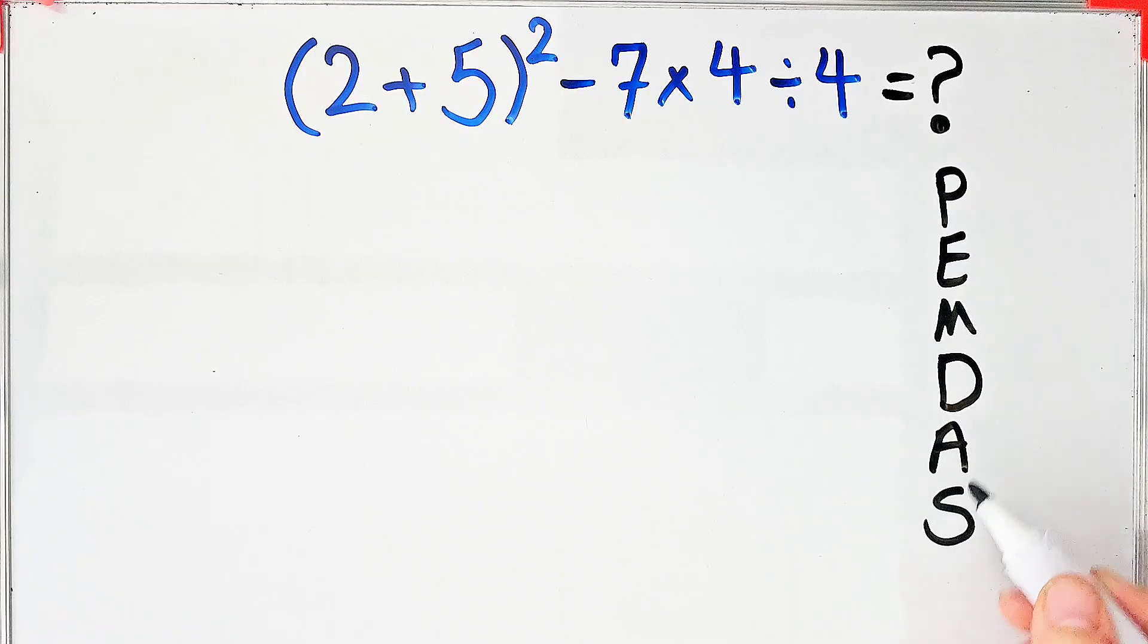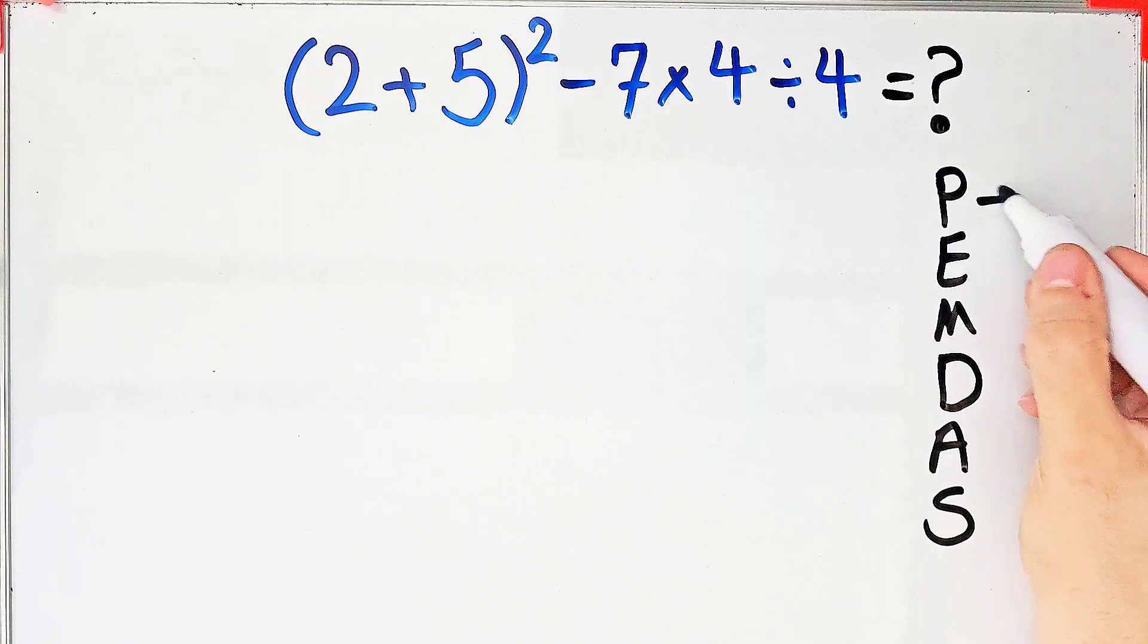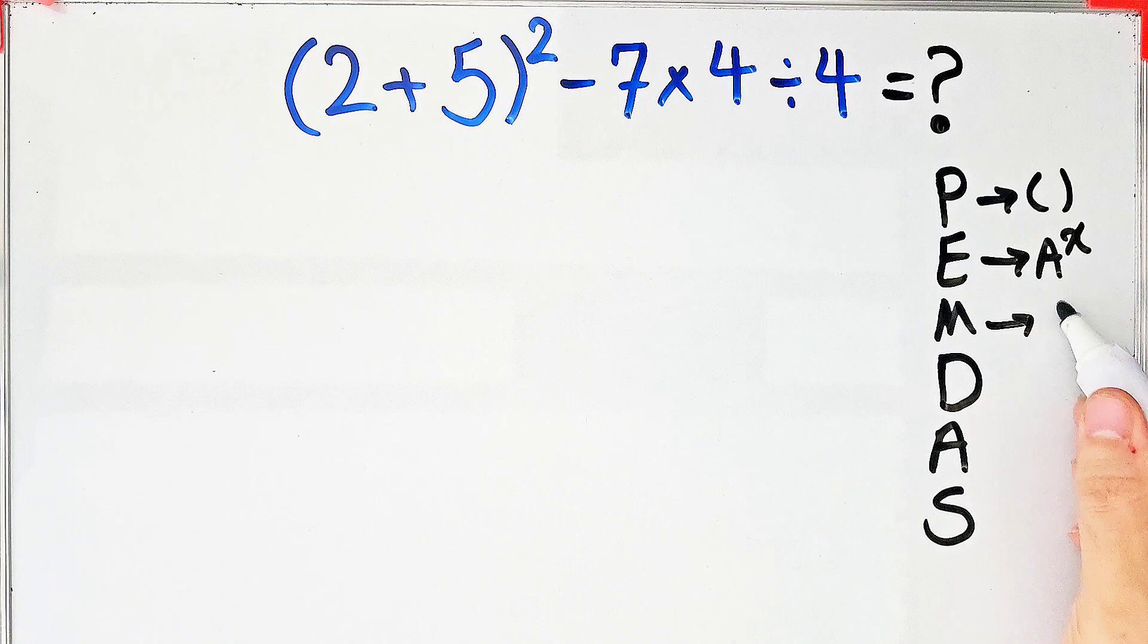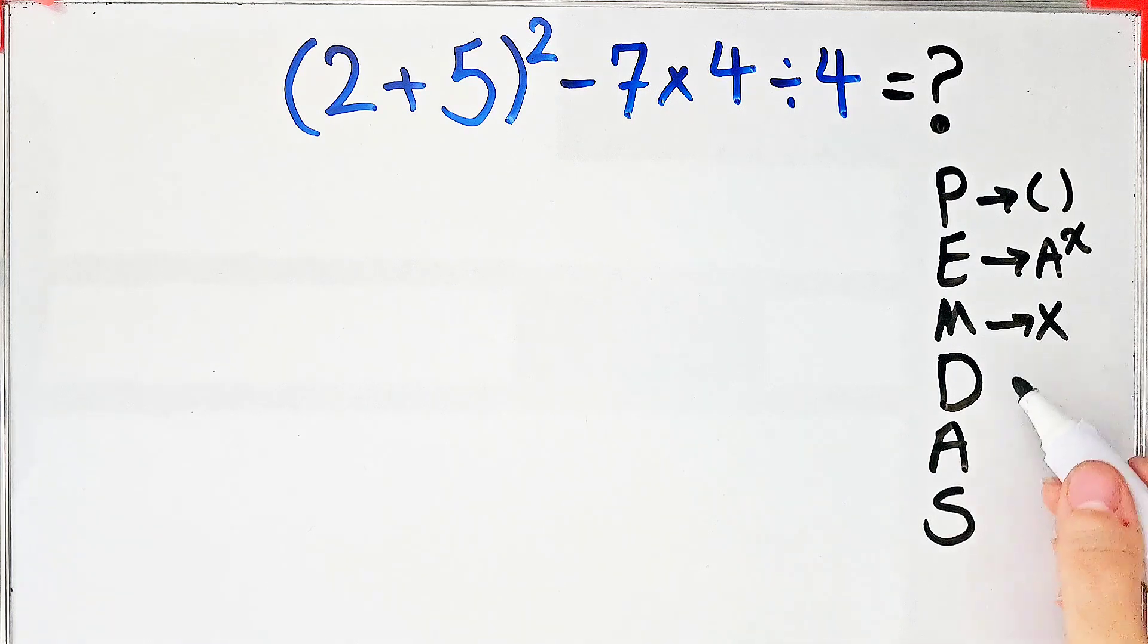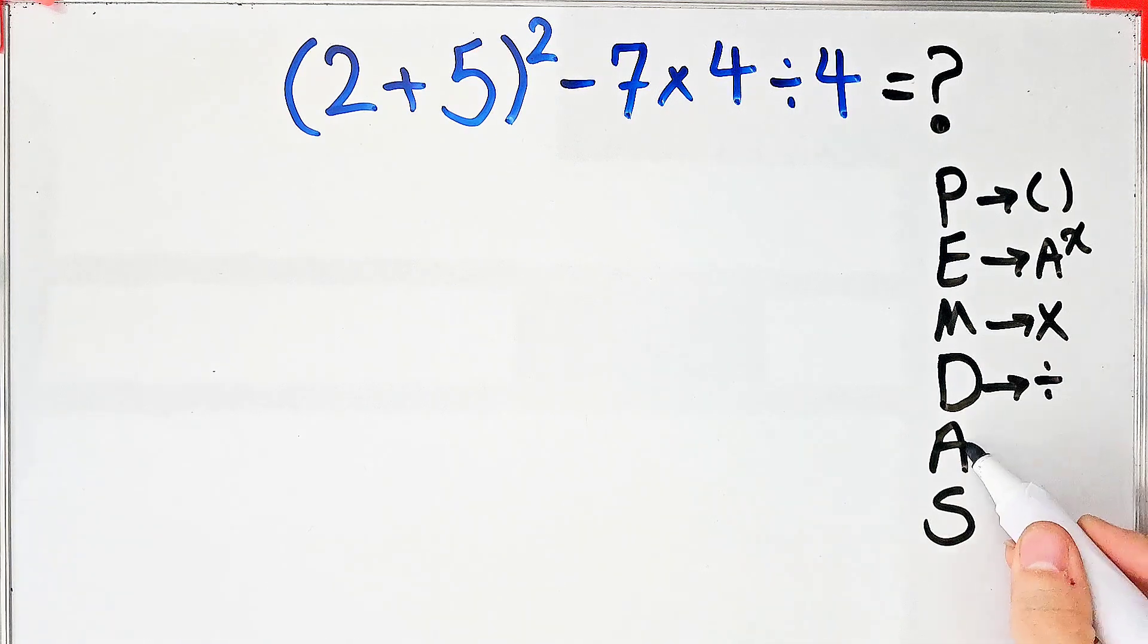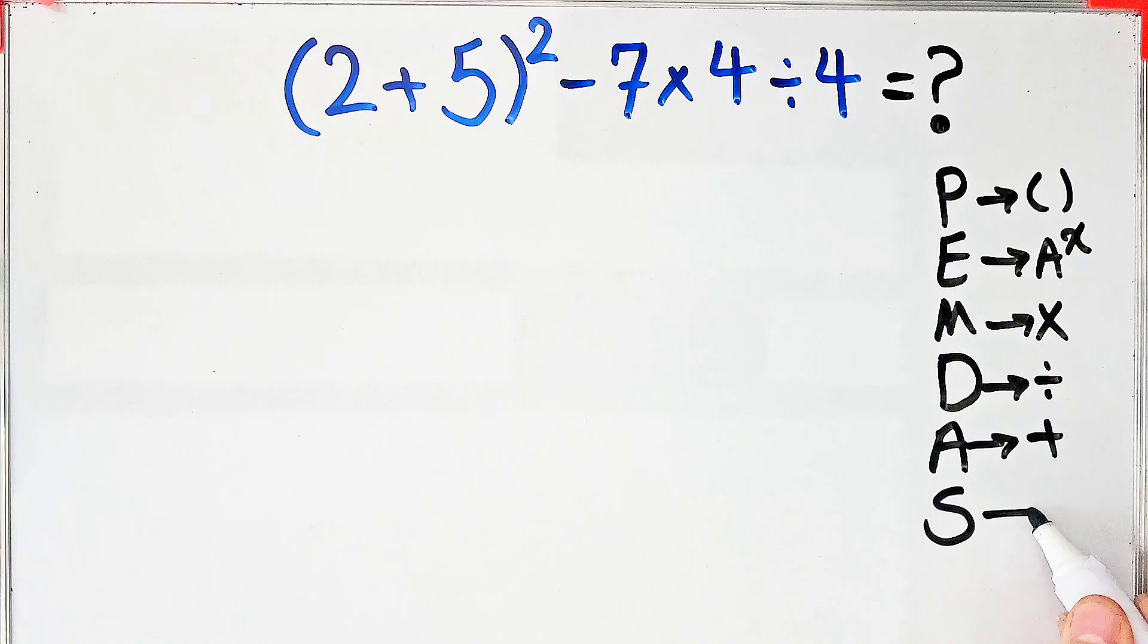And if you don't pay attention to this rule, you get the wrong answer. In this rule, P stands for parentheses, E stands for exponent, M stands for multiplication, D stands for division, A stands for addition, and S stands for subtraction.